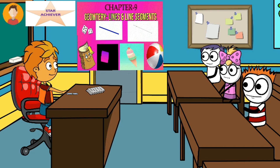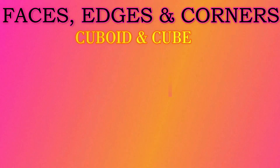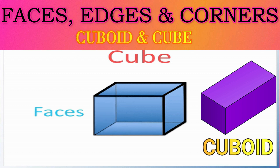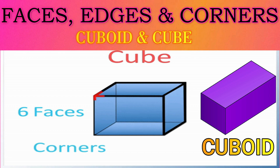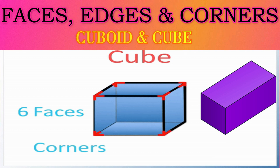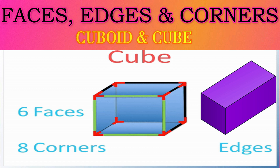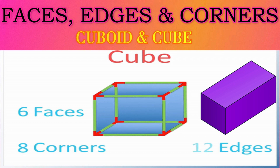Now each solid has faces, edges, and corners. Some have curved surfaces and some have flat surfaces. Now I'll show you some more video to help you understand these facts. In the cuboid, we are showing the first face, second face, third face, fourth face, fifth face, and sixth face — so total six faces. Corners: corner one, two, three, four, five, six, seven, and eight — eight corners. The line segments are edges: one through twelve — 12 edges.